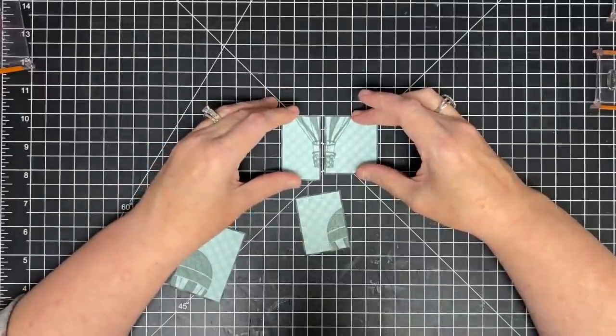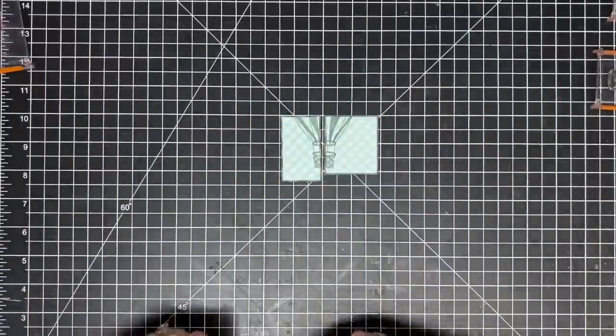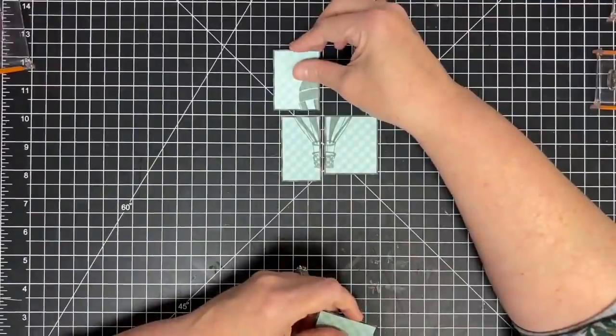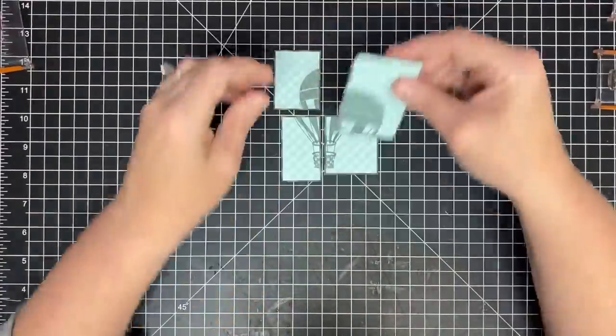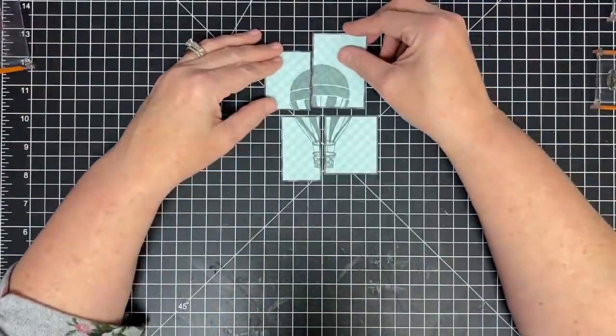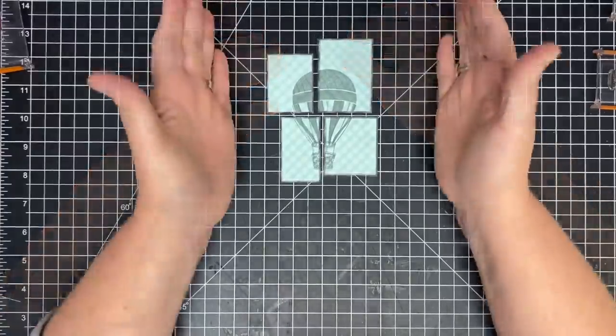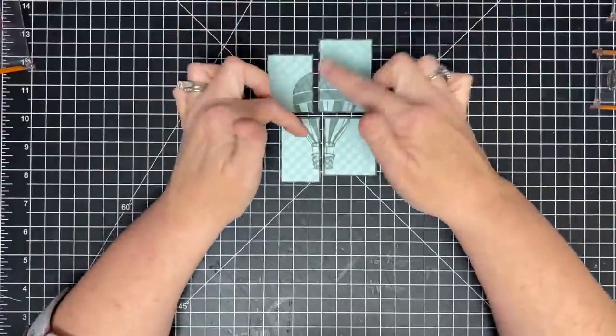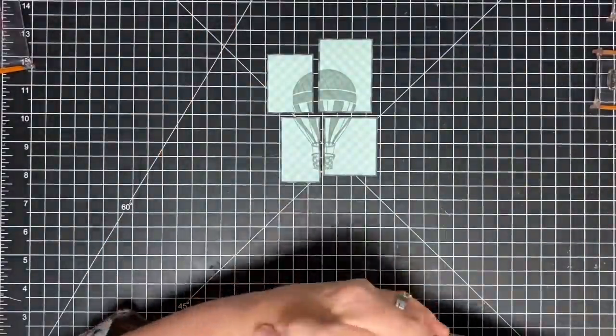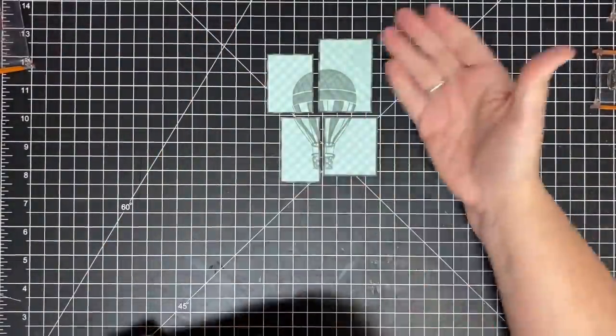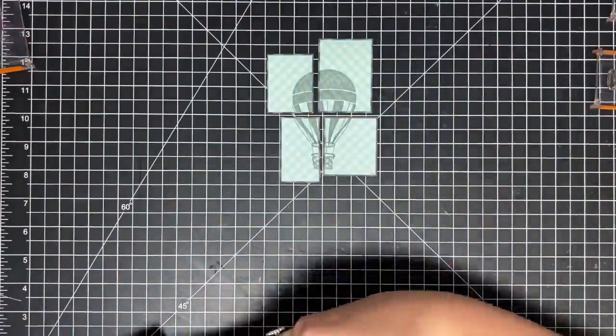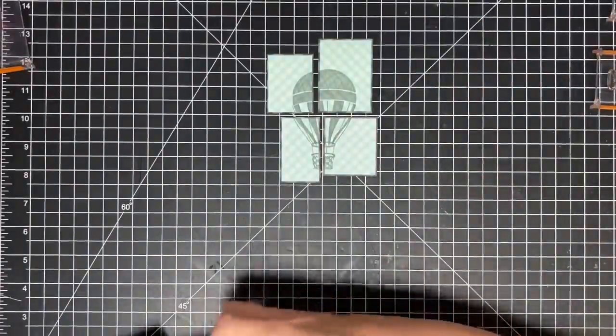So here I have my pieces all matted. They look really cool like that too. So let's get these lined up like they're supposed to go. So there we go. There's kind of my image laid out with the mats on them. What I need to decide now is a sentiment and what I want to put behind it. I have a couple ideas.